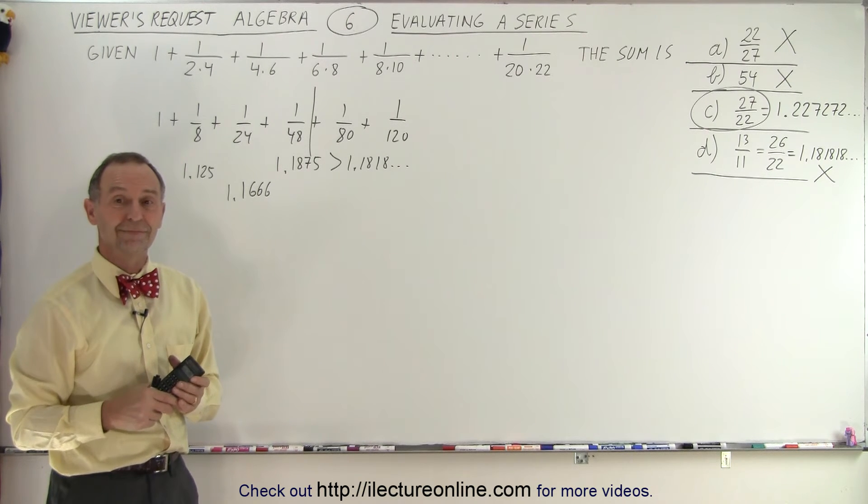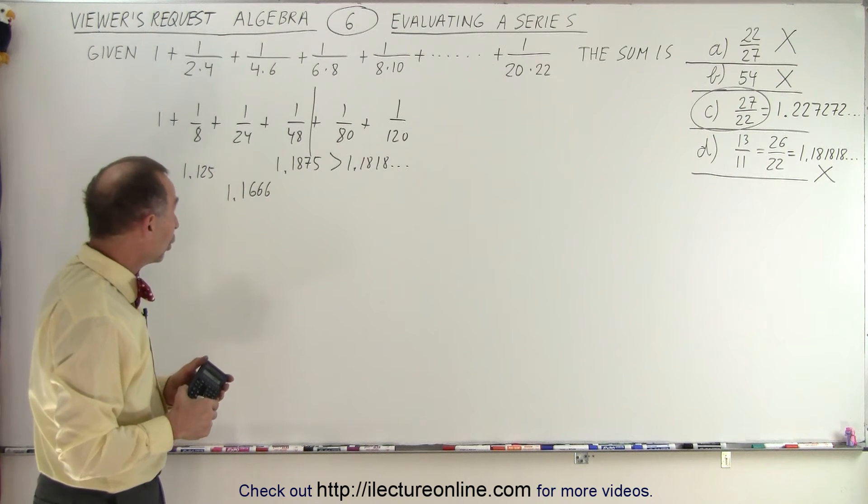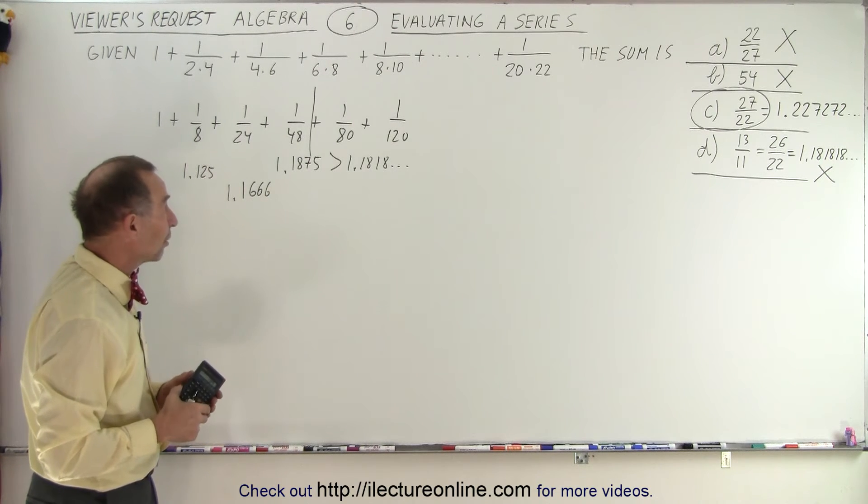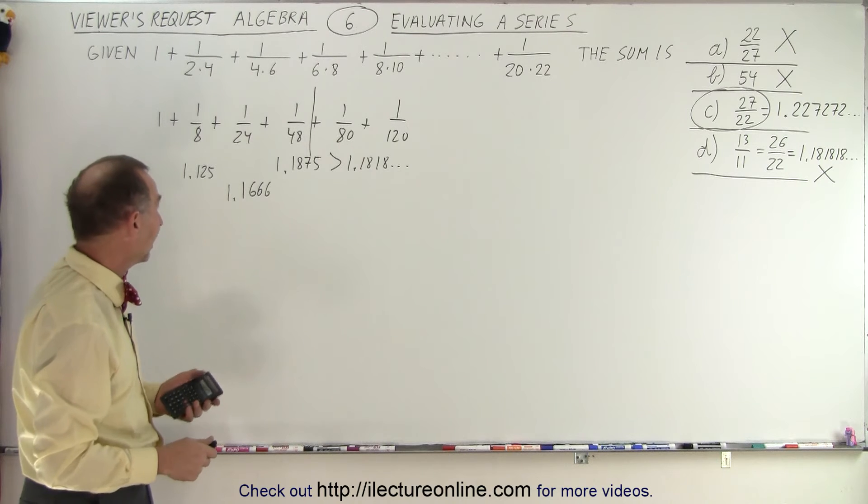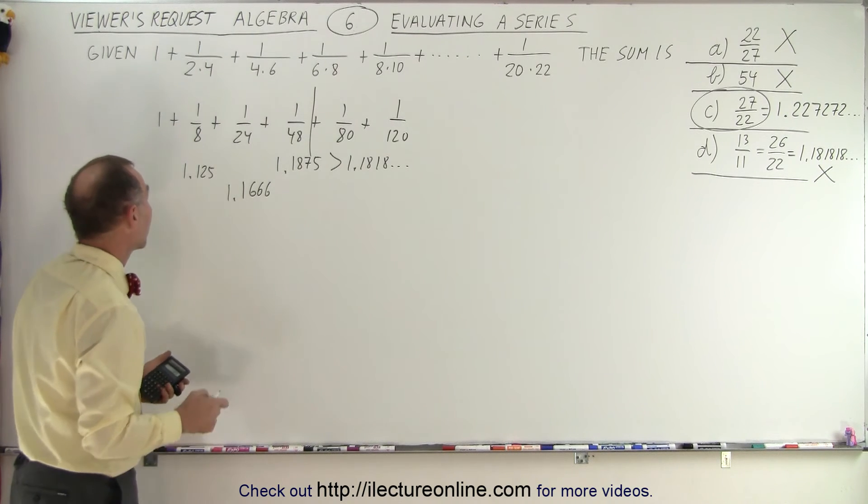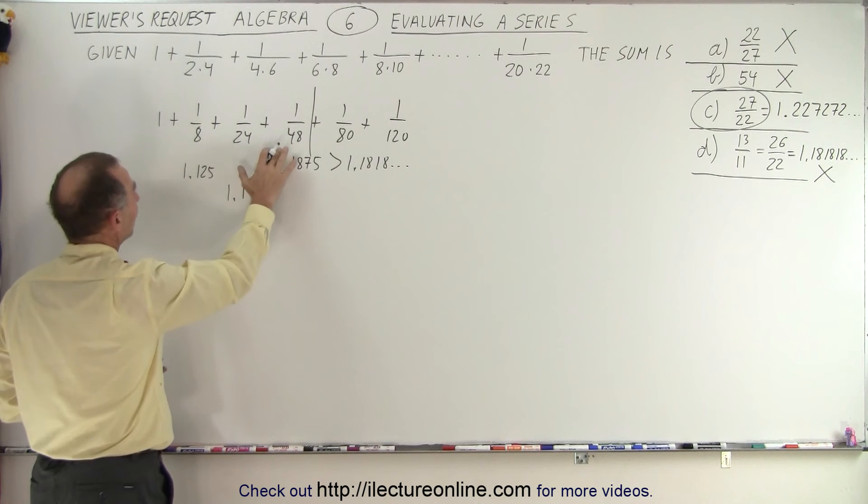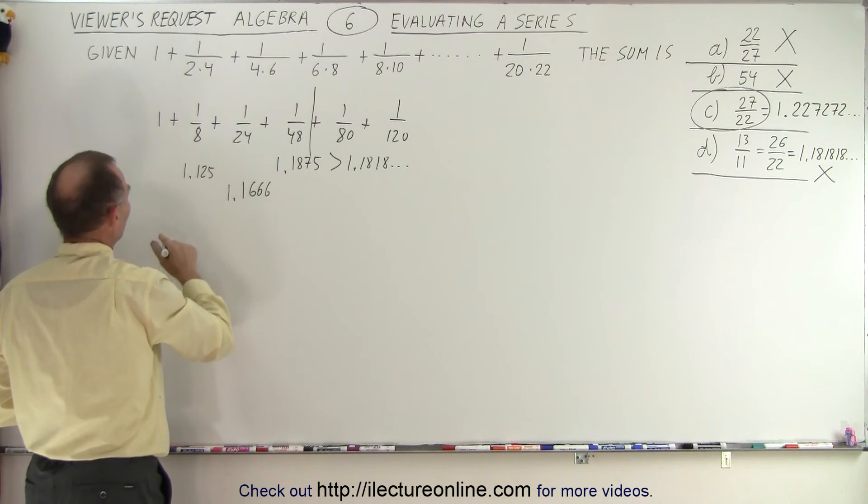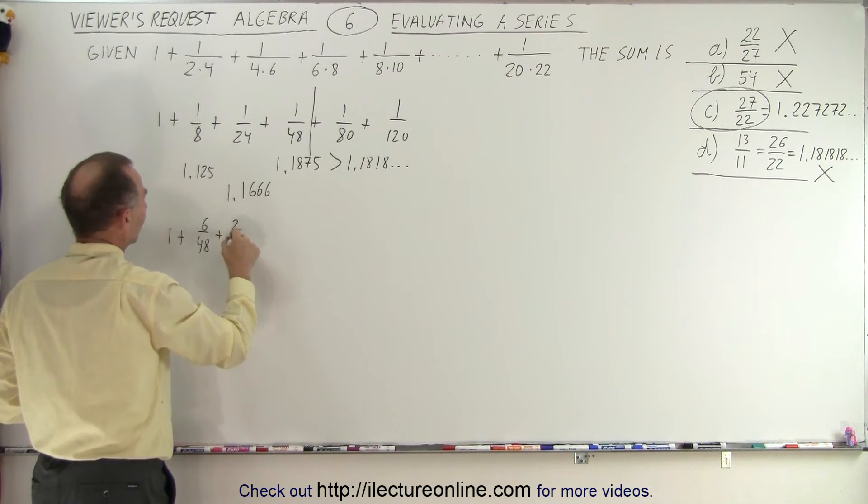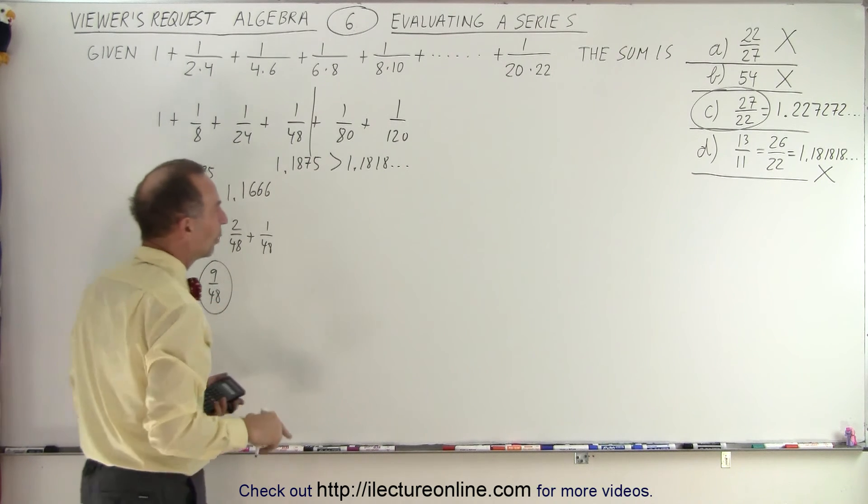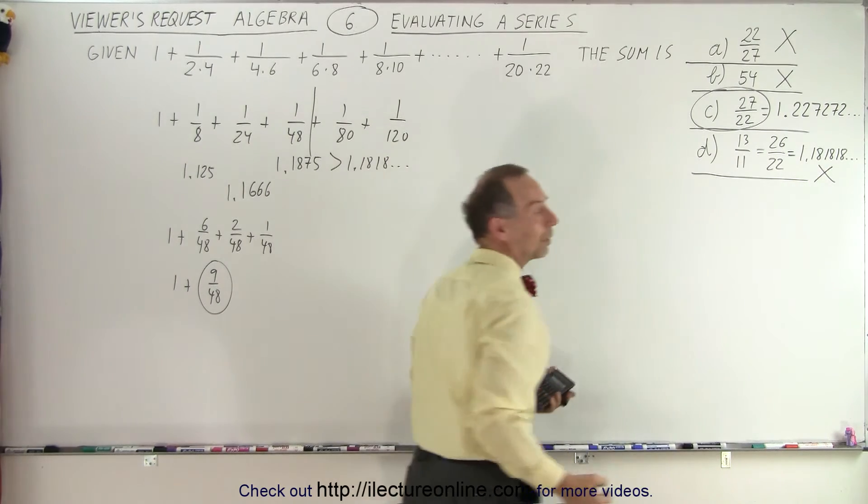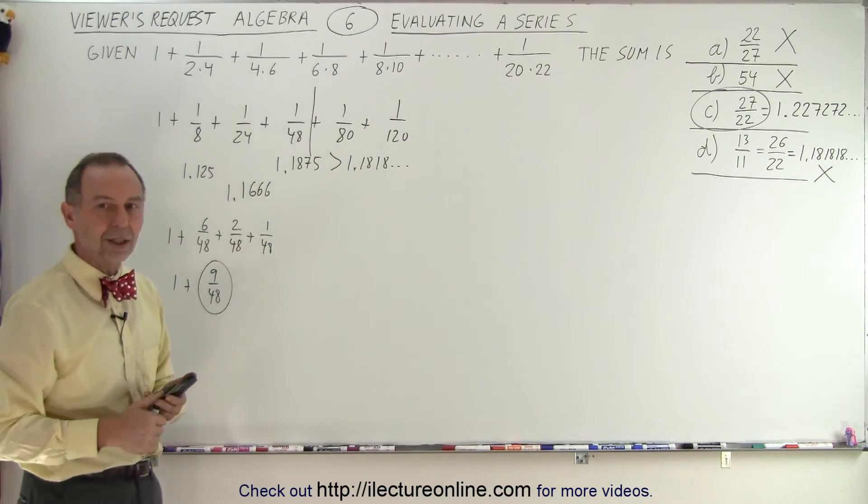Could you do this without a calculator? You could, but you would have to approximate it. So if you're forced to not using a calculator, you could do that longhand division. Right? That's not that difficult to do. And then you would start adding this. And so what you would do is you would probably come up with common denominators. So this goes into, so this would be 1 plus 6 over 48 plus, that would be 2 over 48 plus 1 over 48. So that would be 1 plus 9 over 48. And then if you go ahead and figure this out, you find that this is already bigger than the 1.1818. So you could do it by hand, it just would take a little longer.